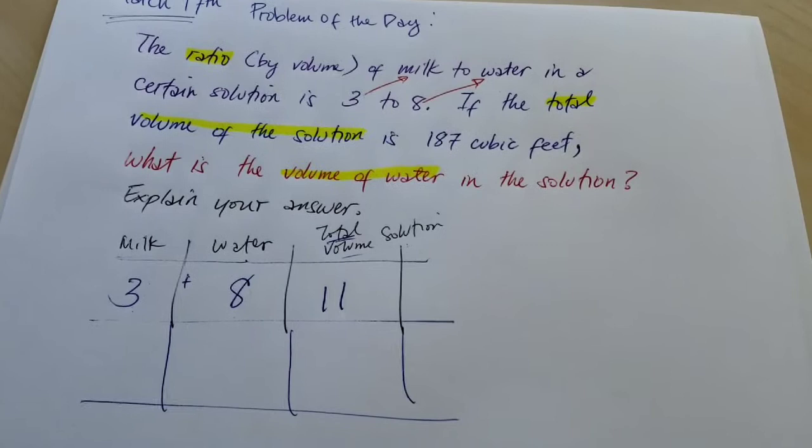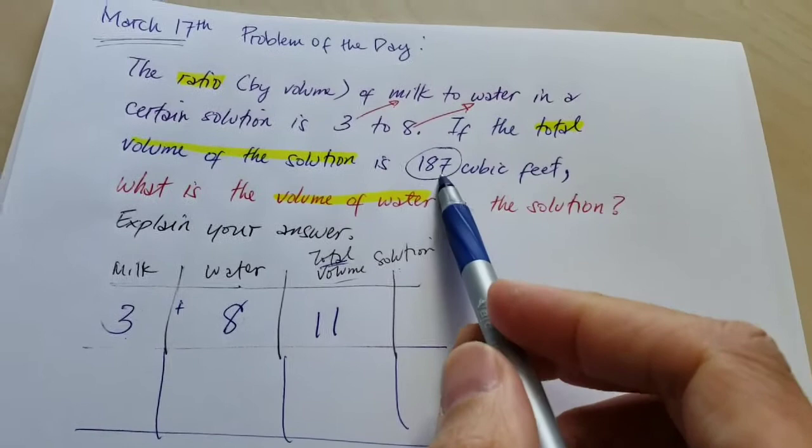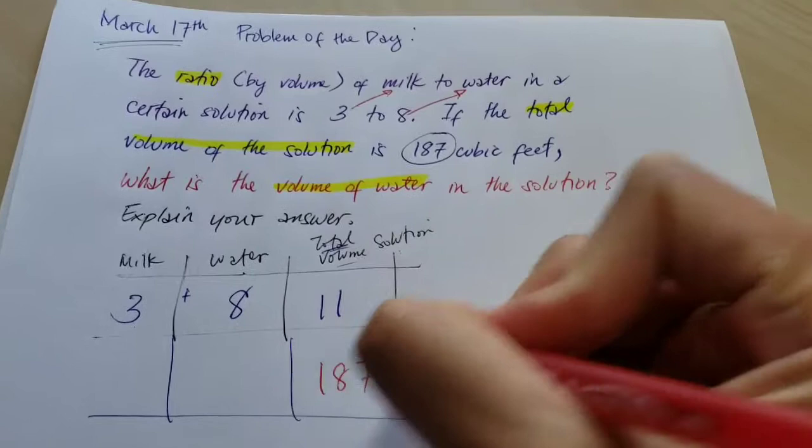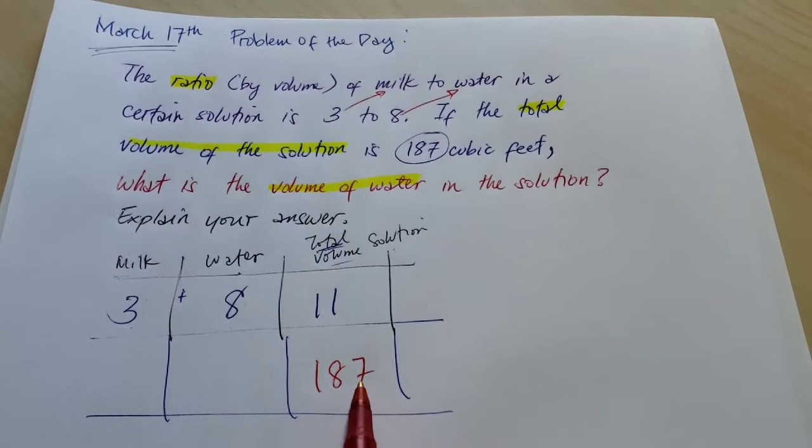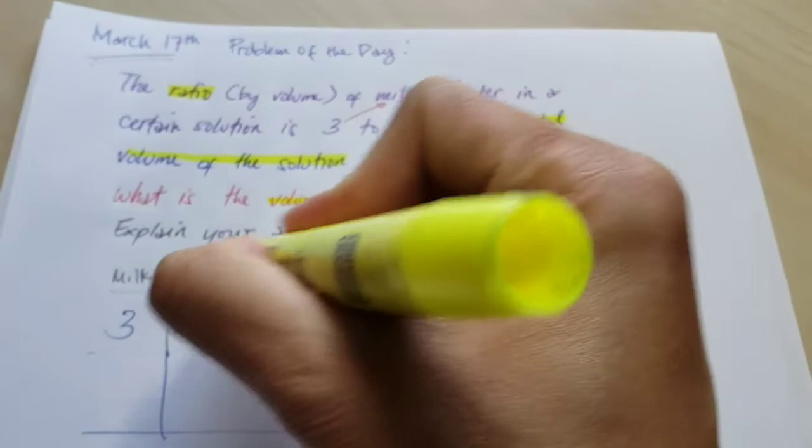Now it says here if the total volume of the solution is 187 cubic feet. So this 187 pertains to the total volume of the solution. So it should be under the column, on the third column. So this should be 187. So if the total volume of the solution is 187 cubic feet, what is the volume of the water? So we're trying to find out the volume of this water.